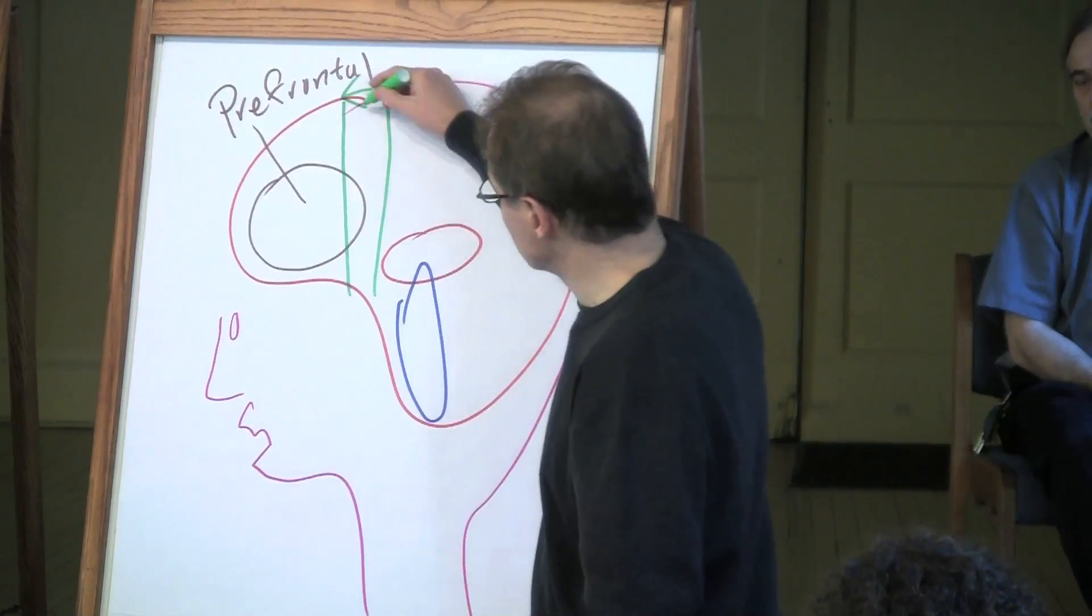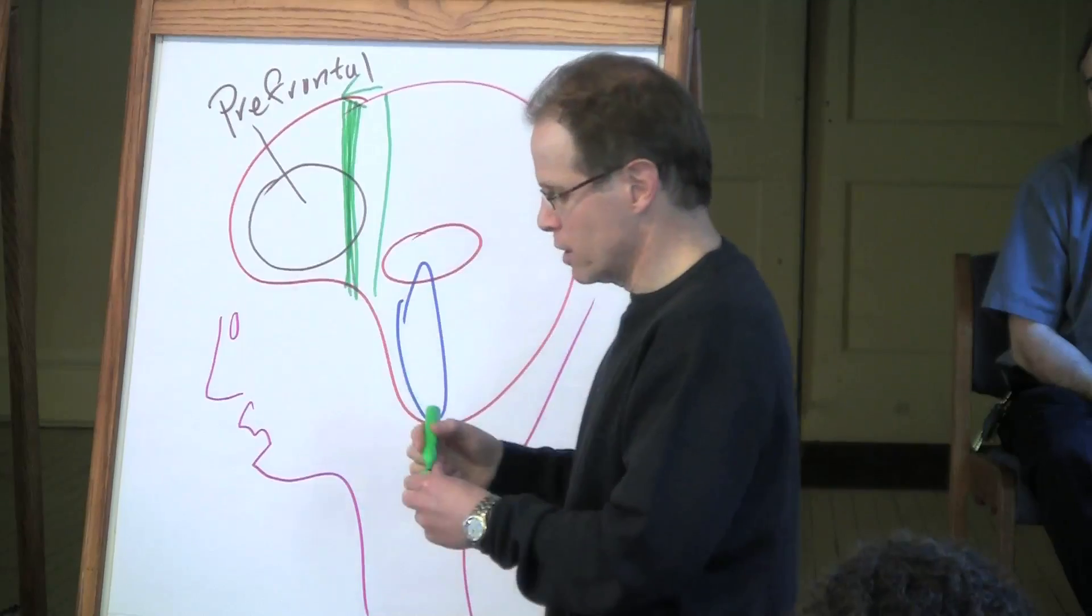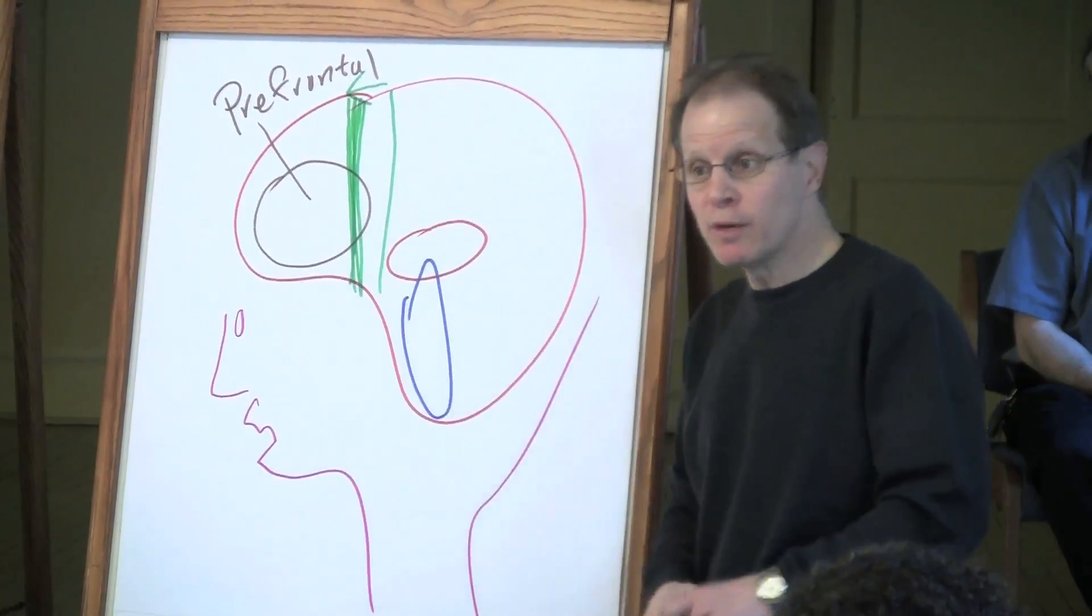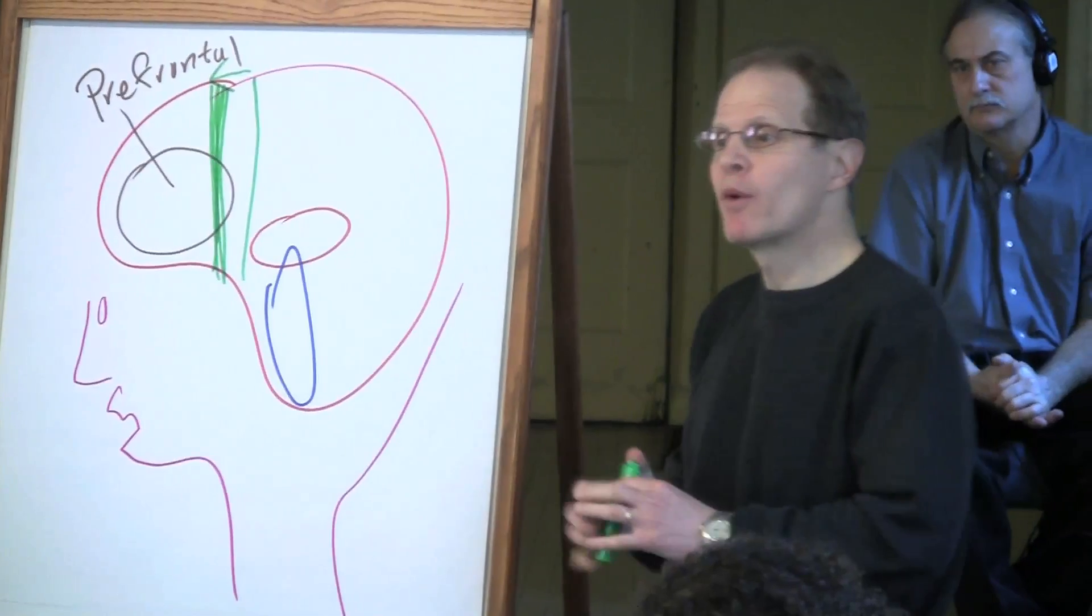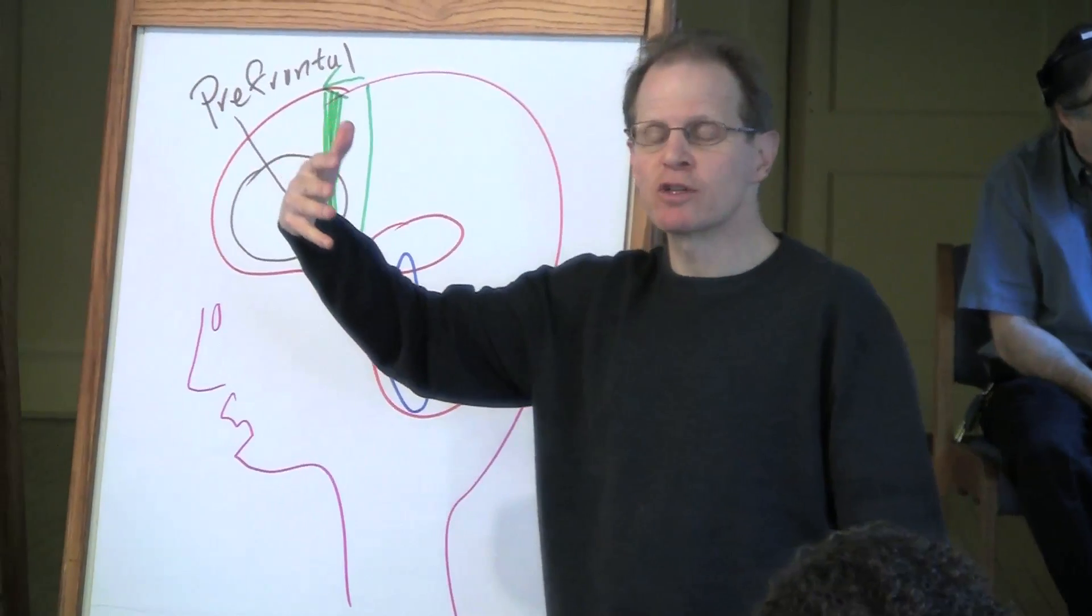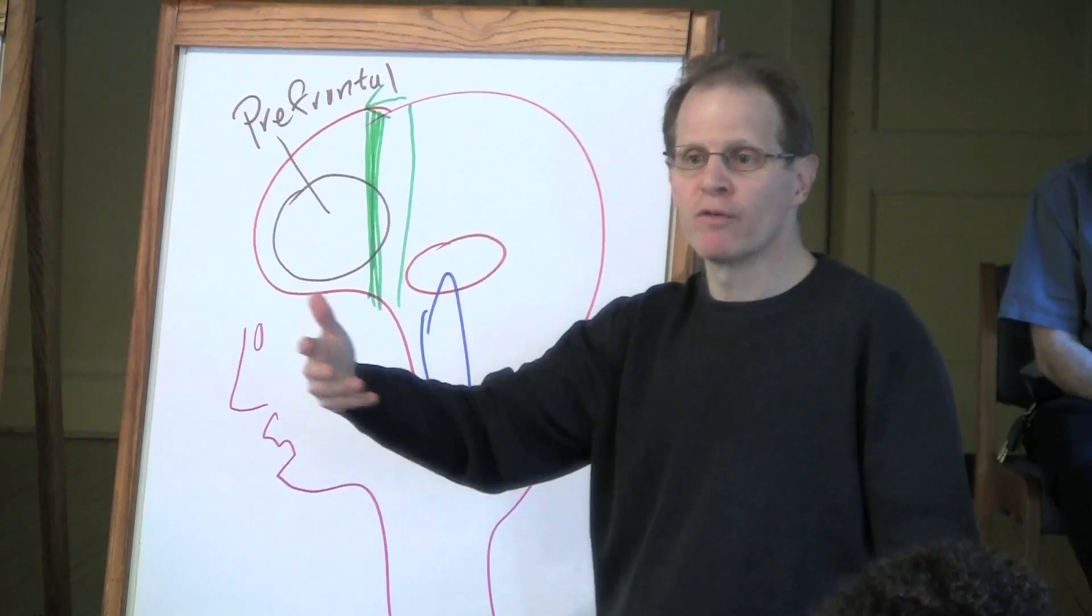But the premotor strip interestingly right here where you plan what you're doing is very much connected to this prefrontal area. Now the prefrontal areas where we have thinking and where we move far enough away from the physical world where you have abstract notions like right and wrong and justice, freedom, love, compassion.